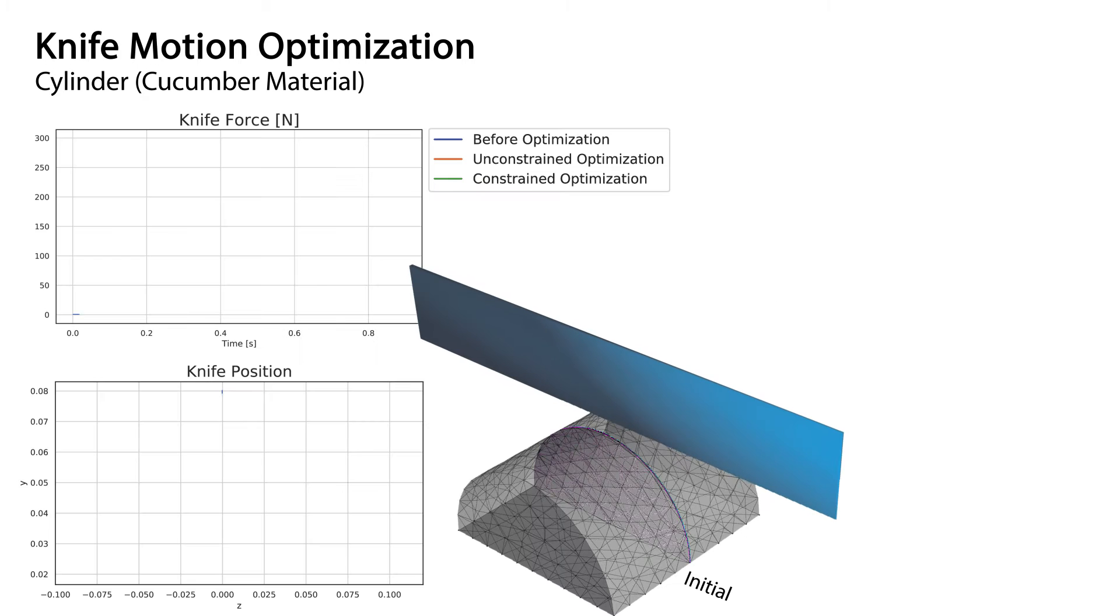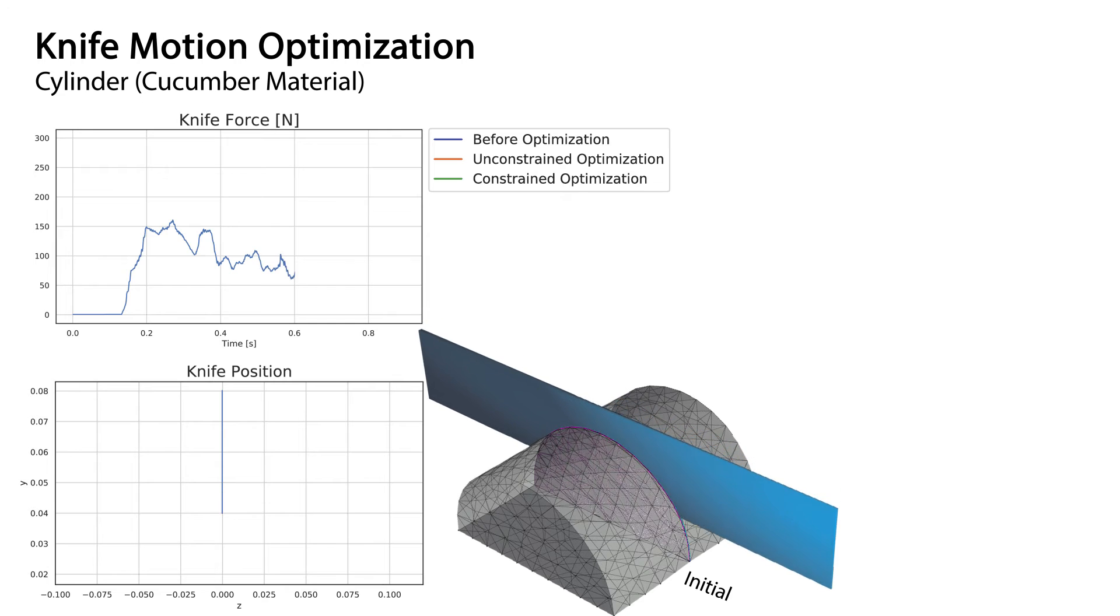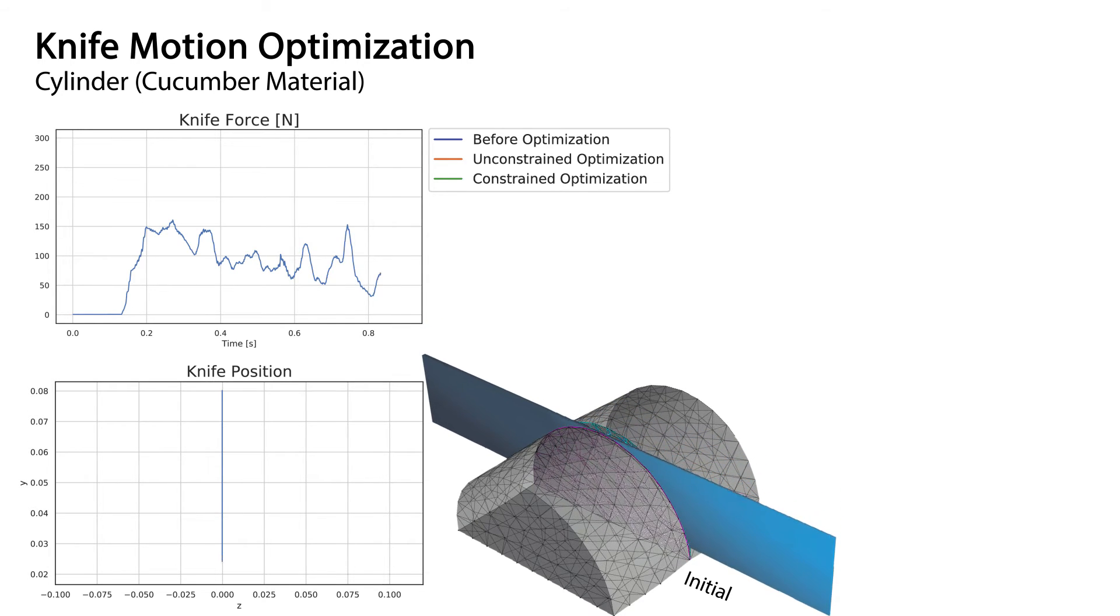At the start of the optimization, the initial motion is a straight downward pressing trajectory. We optimize this trajectory with the objective to minimize the mean force on the knife and penalize the time it takes to cut the object.